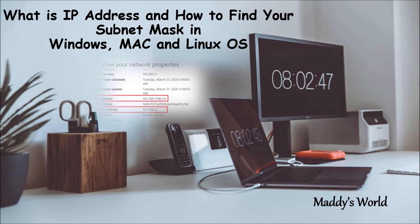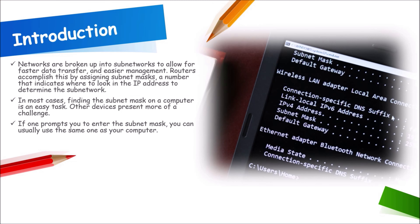Hello everyone. In today's video we are going to discuss what is an IP address and how to find the subnet mask in Windows, Mac, or Linux operating system. Networks are broken up into subnetworks to allow for faster data transfer and easier management. Routers can accomplish this by assigning a subnet mask, a number that indicates where to look into the IP address to determine a subnetwork. Finding a subnet mask is generally an easier task.